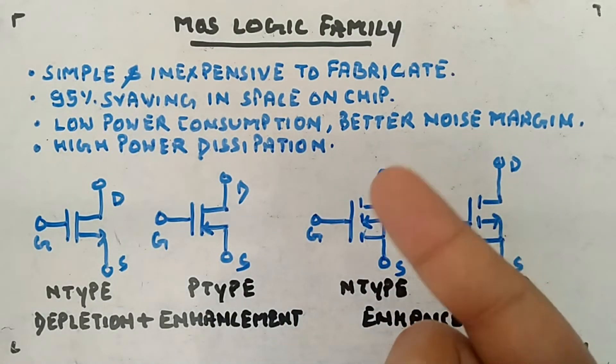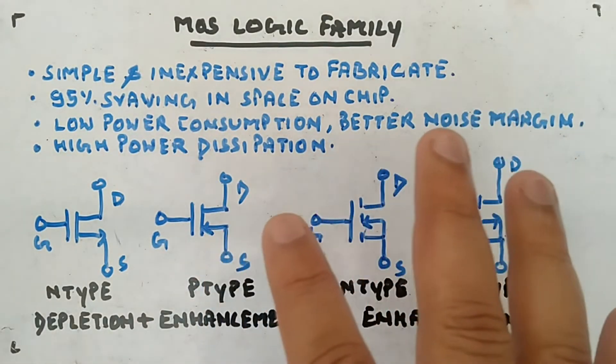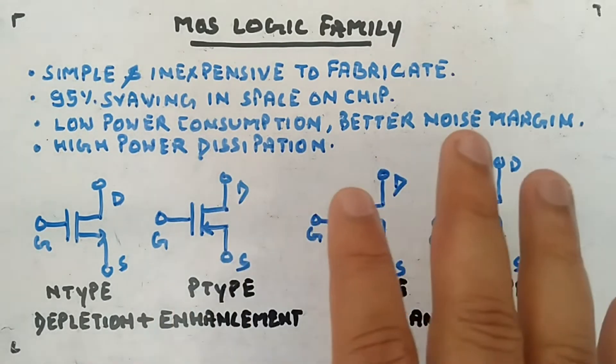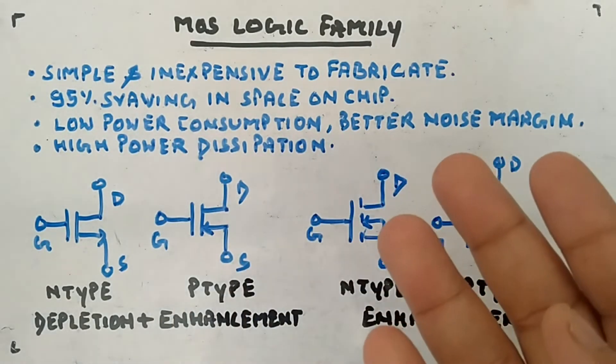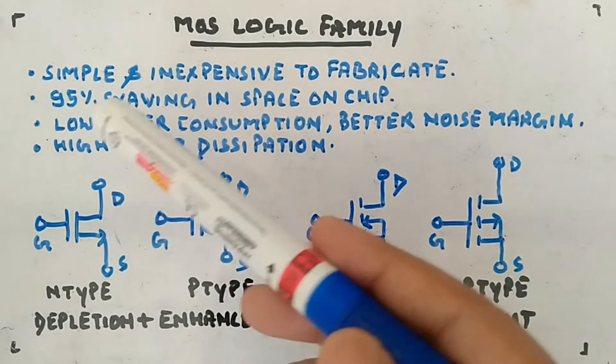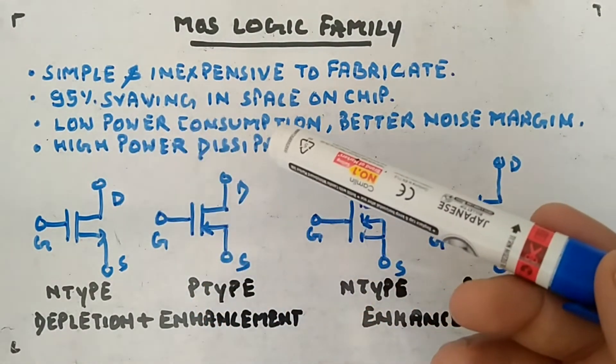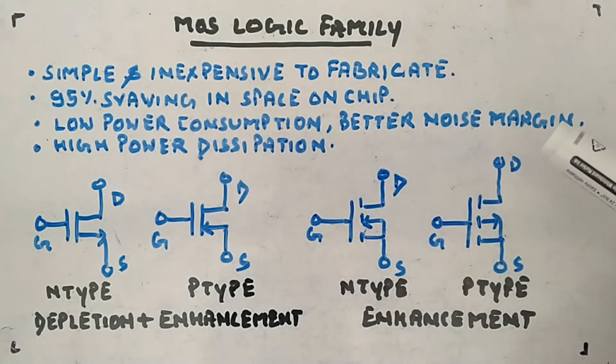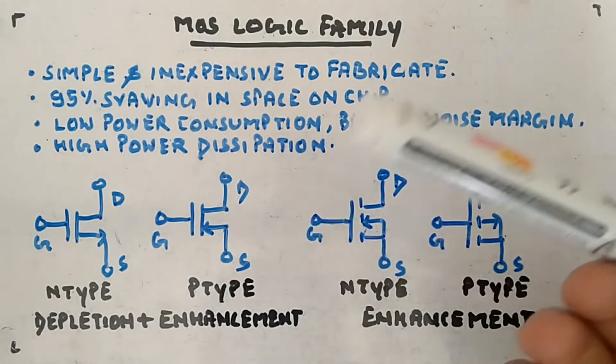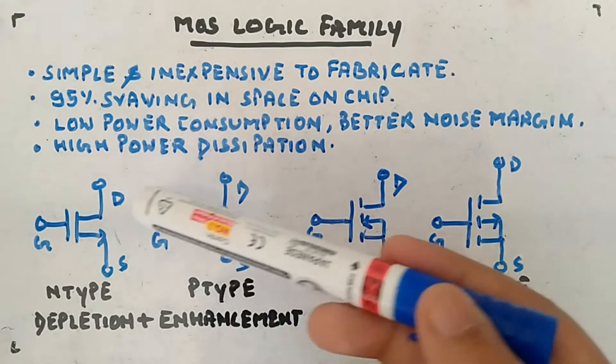You will only need MOSFETs and that's all - one or two MOSFETs, three MOSFETs, and you will be able to get the logic gate. That's why it saves a lot of space compared to BJT. It will also have low power consumption as well as better noise margin, but at the cost of high...